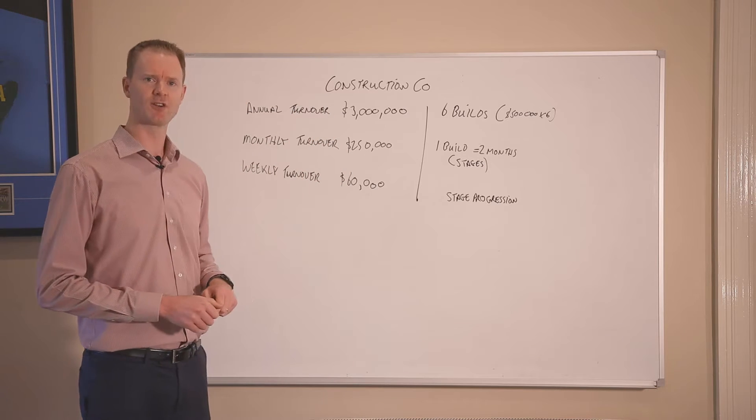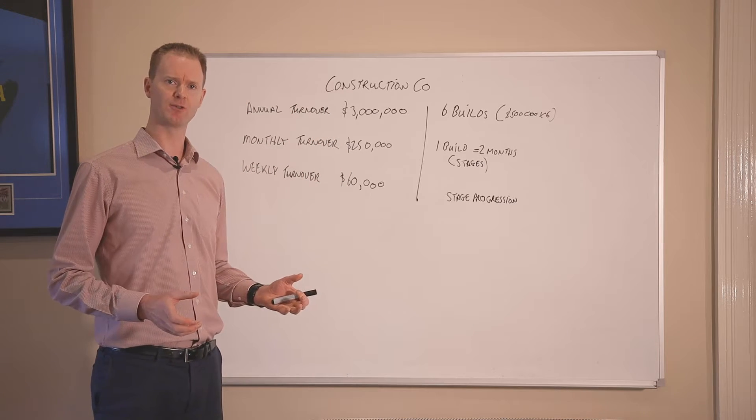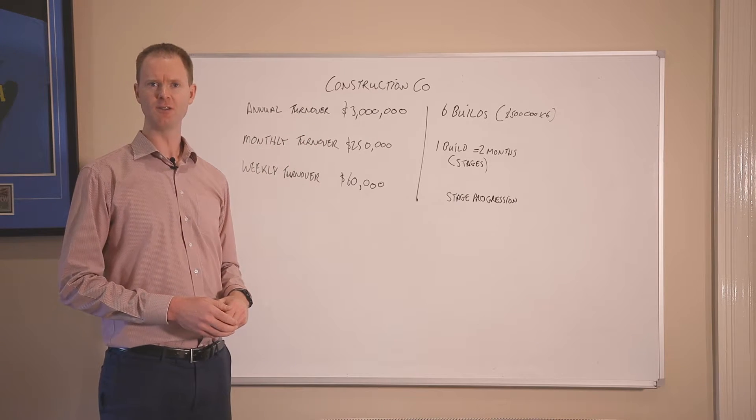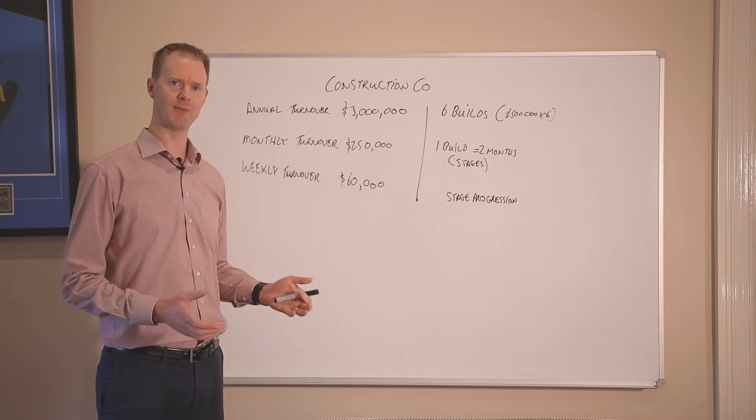The example here, construction company. So construction company builds residential houses. In a normal year, they turn over $3 million because they do six builds of half a million dollars each.